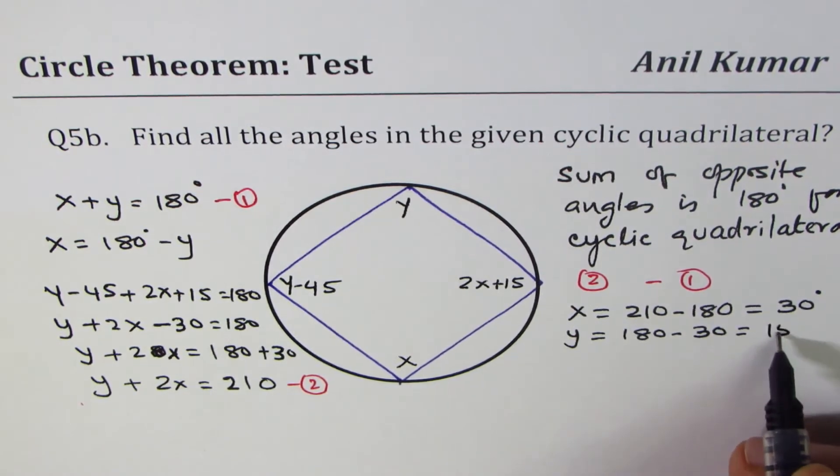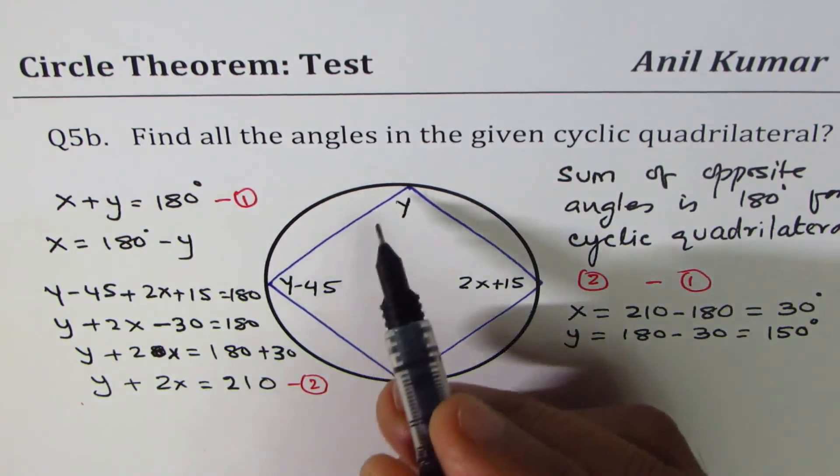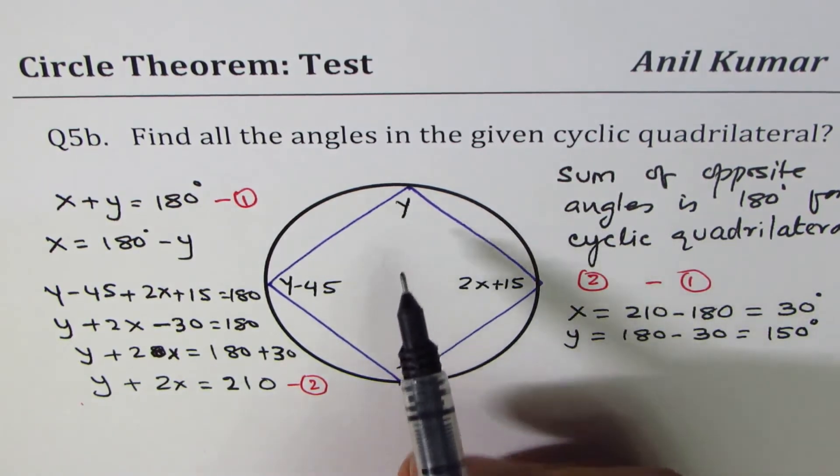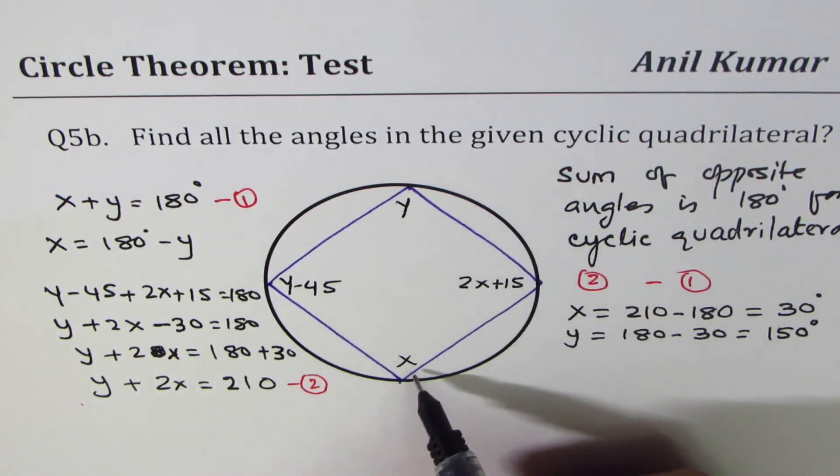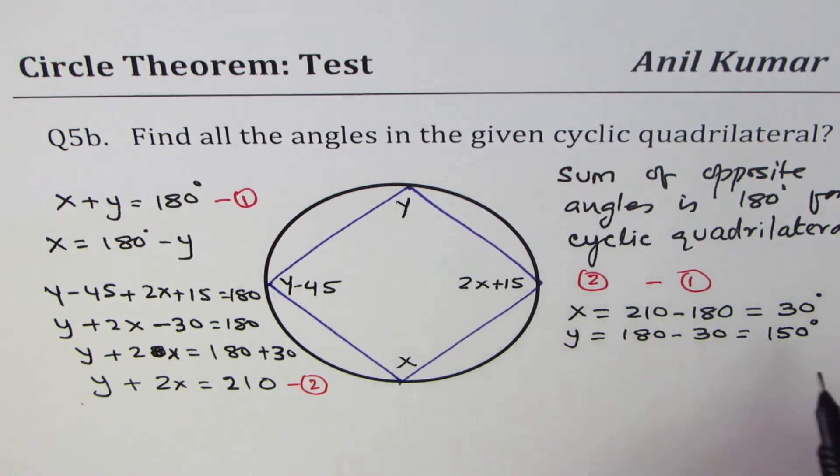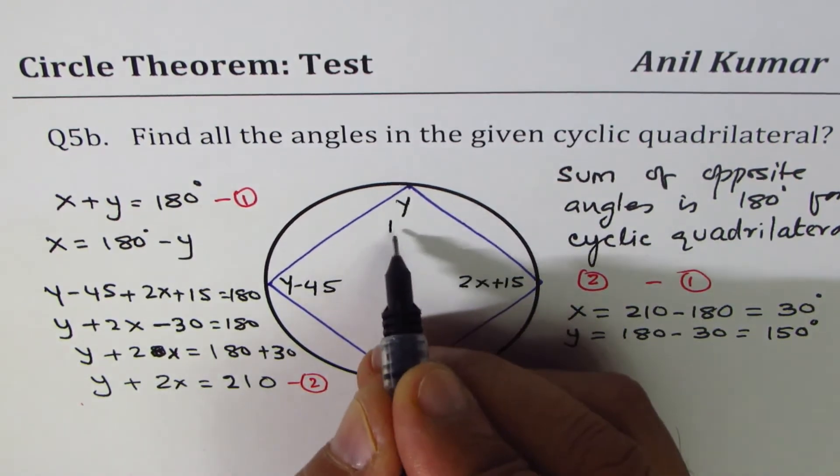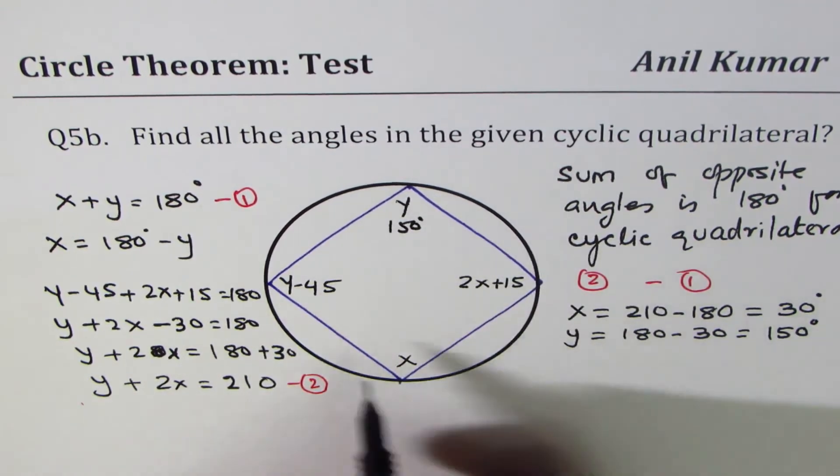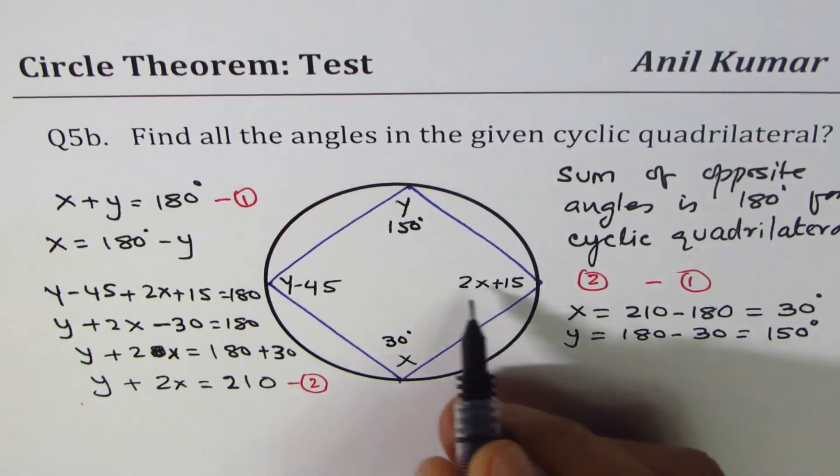Y will be 180 minus x, which is 180 minus 30, so it becomes 150 degrees. So in a cyclic quadrilateral, opposite sides sum to 180.